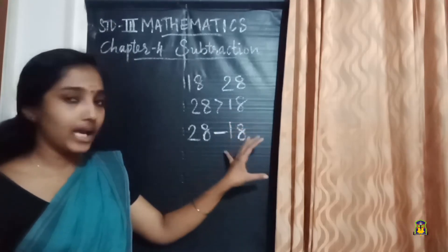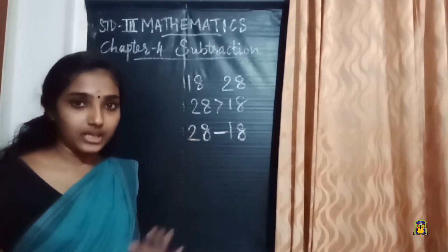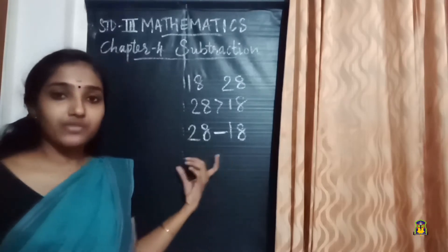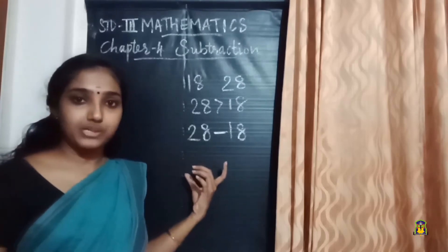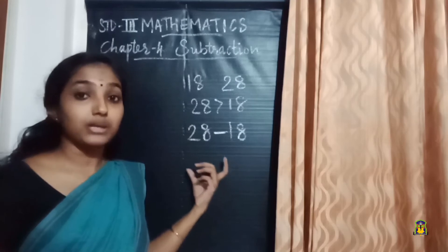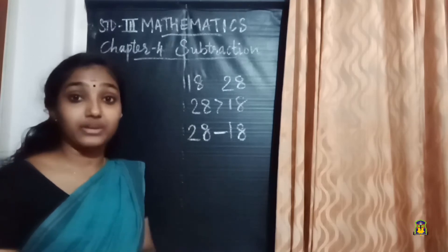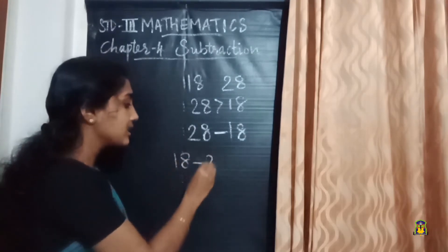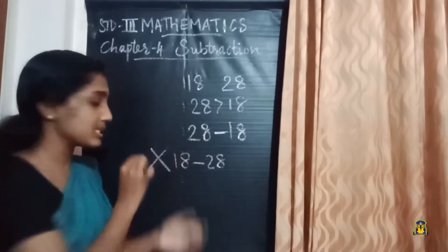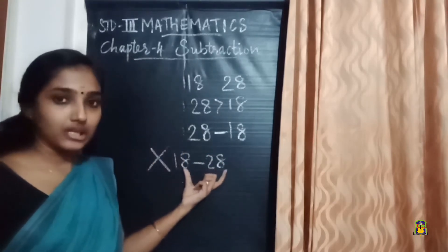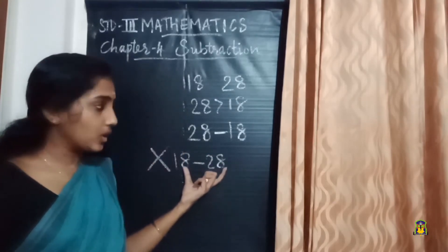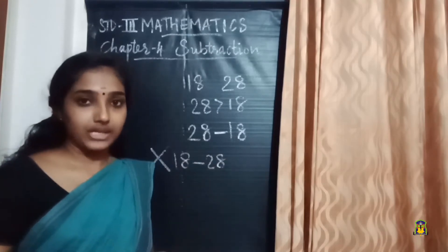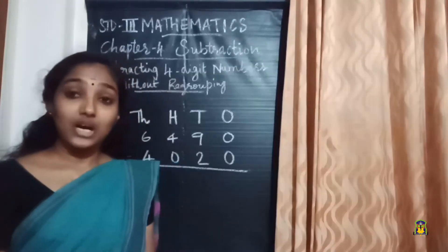Also, change of order is not possible in subtraction. We cannot subtract a bigger number from a smaller number. Writing 18 minus 28 is not possible — change of order is not allowed in subtraction.